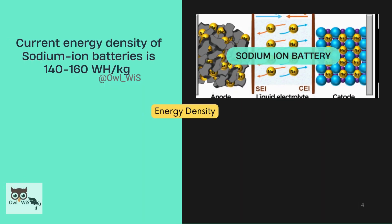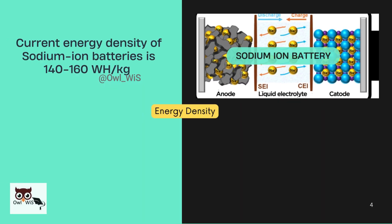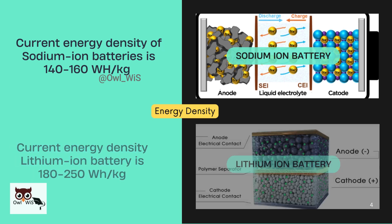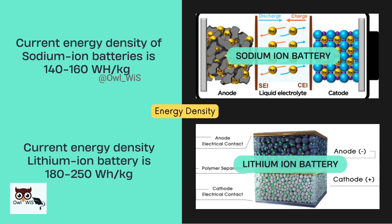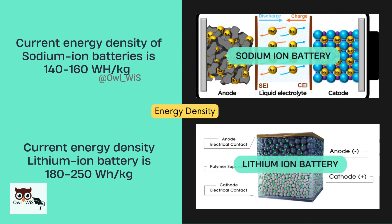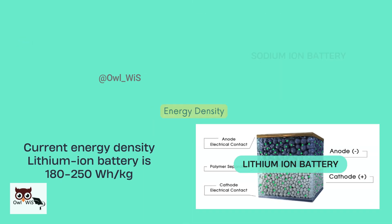Current energy density of sodium ion batteries is 140 to 160 Wh per kg, which is lower than the current energy density of lithium ion batteries, which is 180 to 250 Wh per kg.